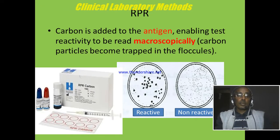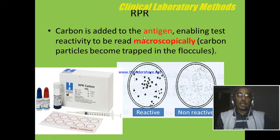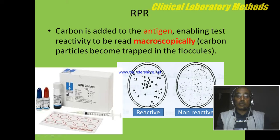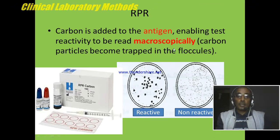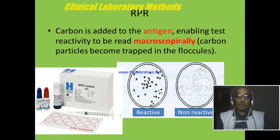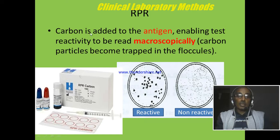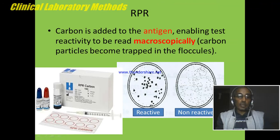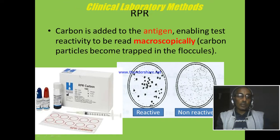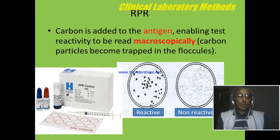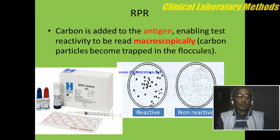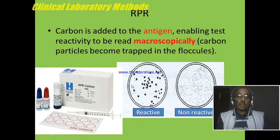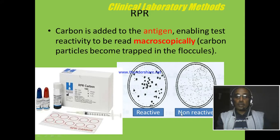RPR is a common type of non-specific test. Carbon particles are attached to the antigen to increase the visibility of the antigen-antibody reaction, making it possible to read the reaction macroscopically. The antigen is coated with carbon particles and prepared in the form of a reagent. We mix one drop of reagent and one drop of sample — serum or plasma. If there is a reaction or agglutination, we report as reactive. If there is no reaction, we report as non-reactive.